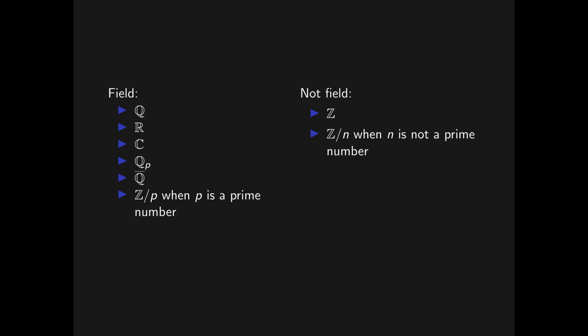So, for instance, in Z mod 5, 3 is invertible because 3 times 2 is 1, and it turns out that all numbers in Z modulo 5 are invertible in this manner.